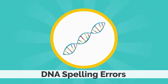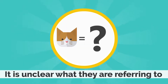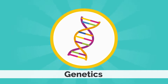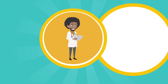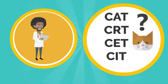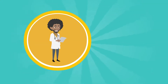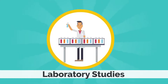Other times the spelling errors are not so understandable. If "cat" is spelled C-R-T, C-E-T, or C-I-T, it is unclear what the person who is spelling the word is referring to. This can happen in genetics — sometimes geneticists don't know how a spelling error can affect the meaning of your DNA, and therefore if it causes a genetic condition or disease or if it does not. These spelling errors are called Variants of Uncertain Significance, or VUS for short.